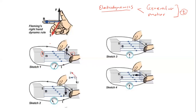In sketch number one, this person tries to flip the coil upwards. There is a measuring device — it could be a galvanometer, voltmeter, or ammeter. When a rotational force is applied moving the coil upwards, the galvanometer deflects to indicate there is current or voltage in the conductor. In sketch number two, the conductor is moved downwards, and the galvanometer deflects in the opposite direction.